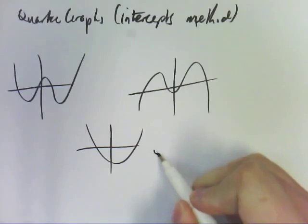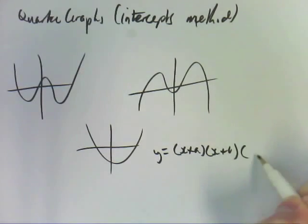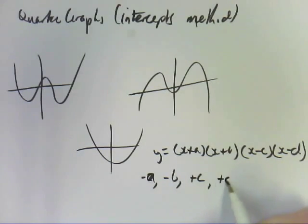So if we have y equals x plus a, x plus b, x minus c, x minus d, our intercepts are at negative a, negative b, positive c, and positive d.